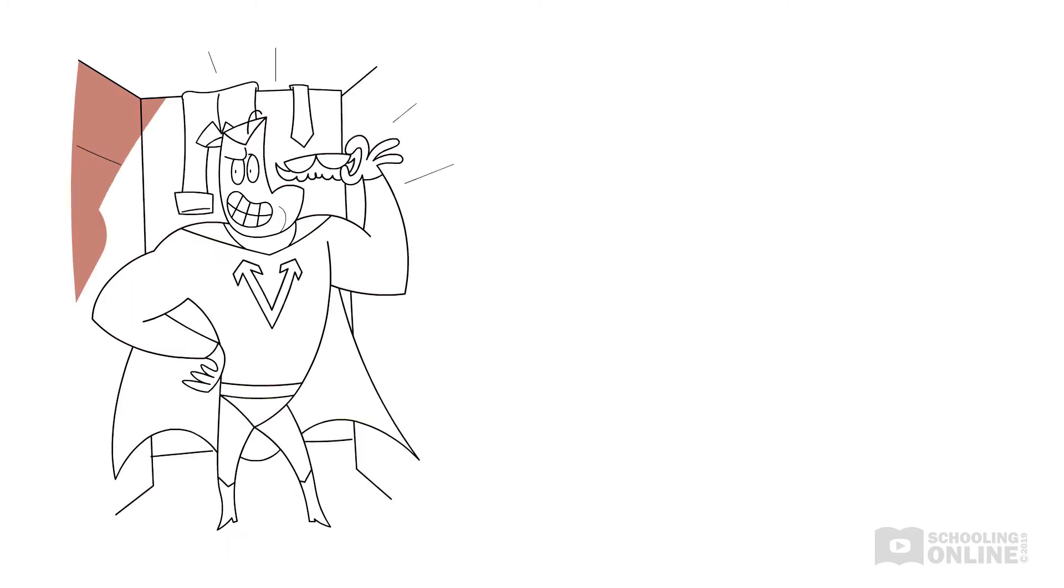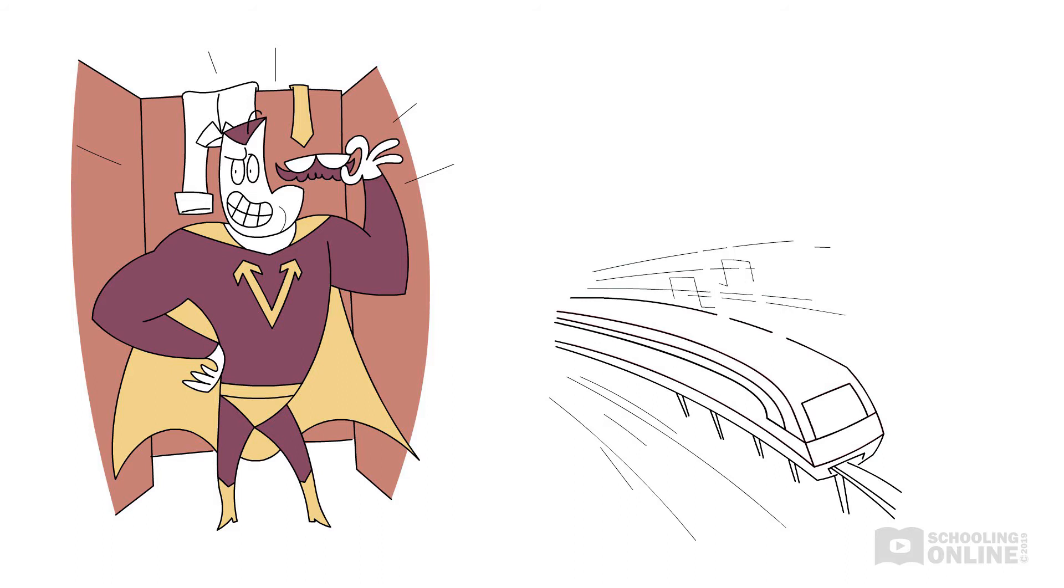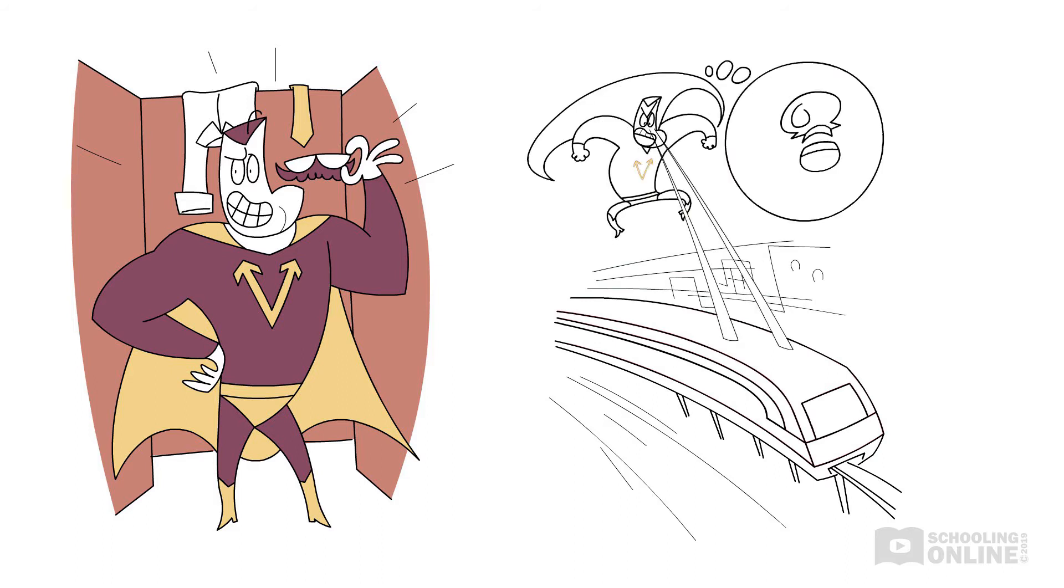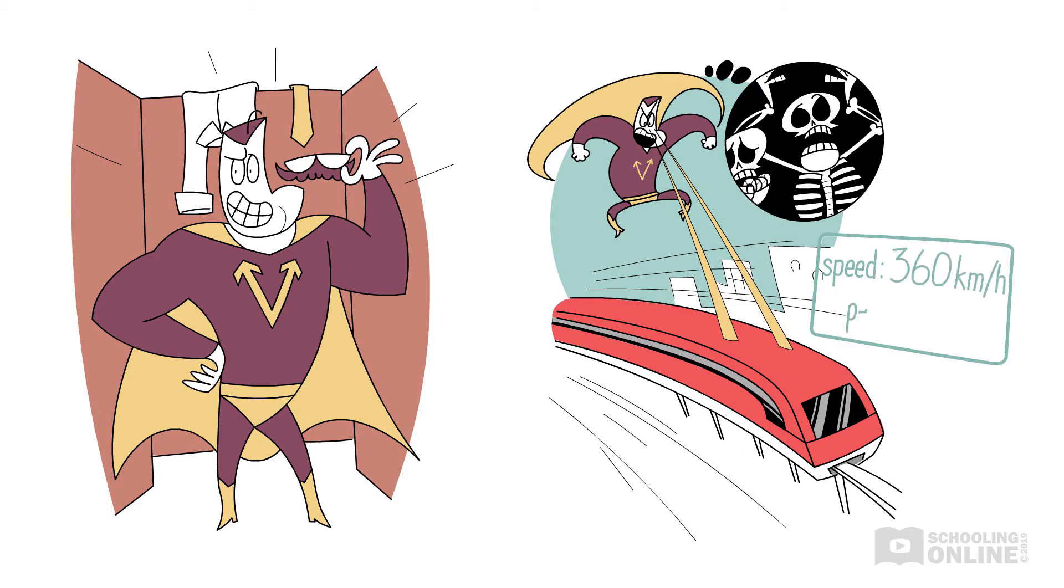Back in the bathroom, we can see that Mark has transformed into the superhero Vector Man. Using his X-ray vision, Vector Man quickly spots the runaway train. He counts 163 passengers and crew on board. That's a lot of people that need to be saved.